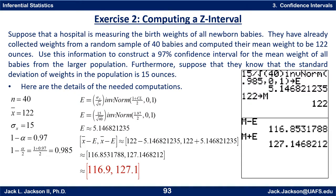Here's what we have needed for the computations: n is 40 (sample size), x-bar is 122, sigma — the standard deviation for the population individuals — is 15, and 1 minus alpha, the confidence level, is 0.97.